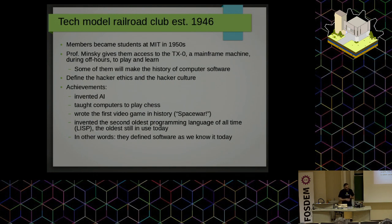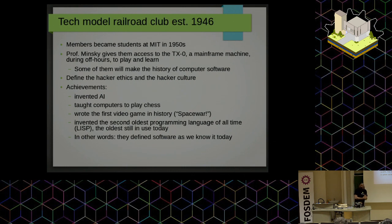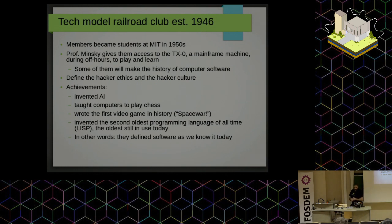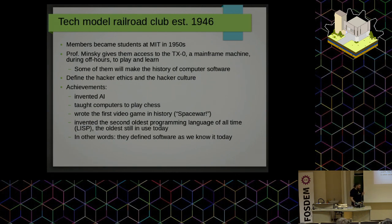They helped greatly in defining software as we know it today, and they also started the hacker community at MIT. Later, some of them moved to Berkeley, met other people, and made history during the 60s and 70s. They were the first ones to theorize the points of hacker ethics — way before the era of the personal computer — mostly because of the struggle to access technologies that were reserved for an elite of people, until personal computers reached everyone.